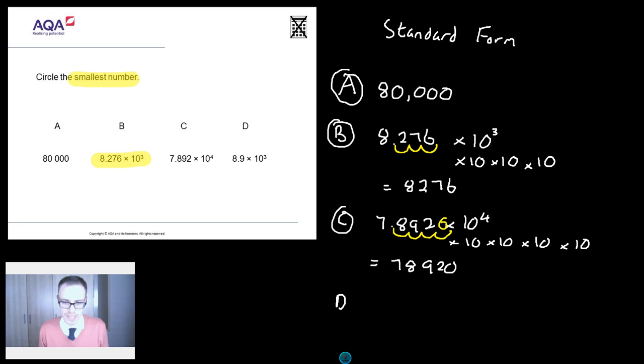And then finally, we've got a bit of D going on here. So we've got 8.9 times 10 to the power of 3. So I'm going to times by 10, by 10, and by 10 again. So times by 10, I'm going to get 89. 9 times by 10 again, 890 by 10 again, 8,900. And again, just for completeness, we go 1, 2, 3, fill in your zeros. And again, you get 8,900.